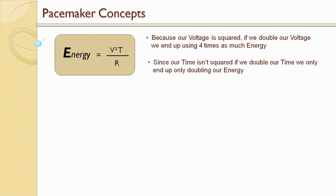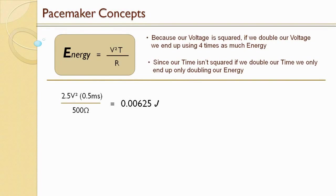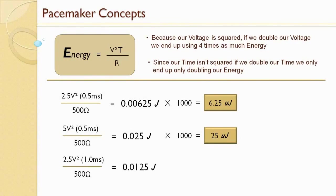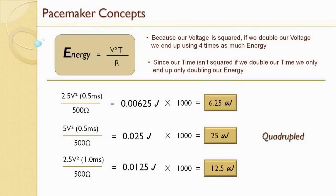Let's run through examples. A pacemaker at 2.5 volts and 0.5 milliseconds with 500 ohms impedance: 2.5² × 0.05 ÷ 500 = 0.00625 joules, or 6.25 microjoules. If we double the voltage to 5 volts: 5² × 0.05 ÷ 500 = 25 microjoules. Going back to 2.5 volts but doubling the pulse width to 1 millisecond: 2.5² × 1 ÷ 500 = 12.5 microjoules. So doubling the voltage quadrupled the energy used, but doubling the pulse width only doubled the energy used.